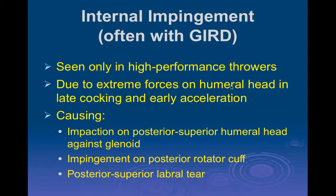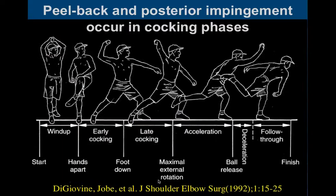Next is internal impingement, often called posterior impingement, often seen with GERD (Glenohumeral Internal Rotation Deficit). This is only seen in high-level athletes - specifically high-performance throwing athletes. It's due to extreme forces on the humeral head in the late cocking and early acceleration phase of the throwing mechanism, causing impaction of the posterior superior part of the humeral head against the posterior superior part of the glenoid. You get impingement on the rotator cuff and on the posterior superior labrum, which are usually abnormal.